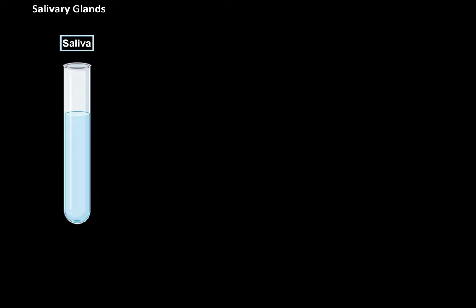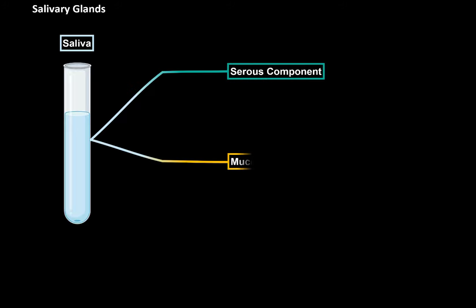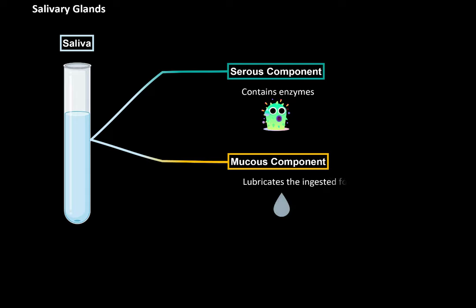Our saliva is made up of two components. There's a serous component and there's a mucus component. The serous component contains enzymes that help us digest the food we eat. The mucus component is mucus that lubricates the inner surface of our mouth, as well as lubricating the food we eat so that it passes easily down the next step of the digestive system. These two components are produced by two different glands: the serous glands and the mucus glands.